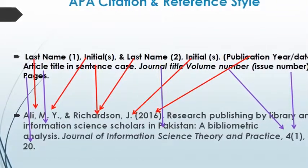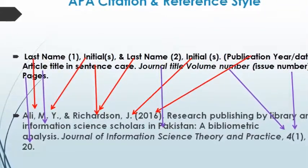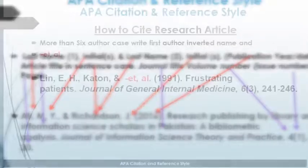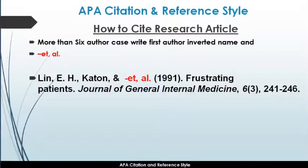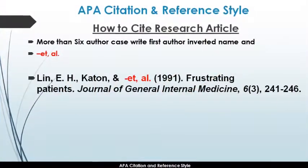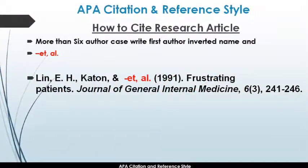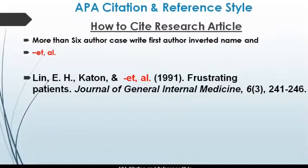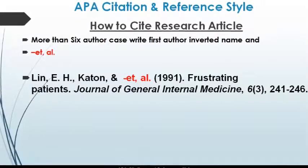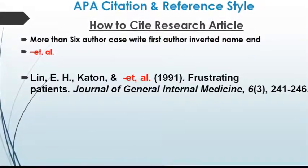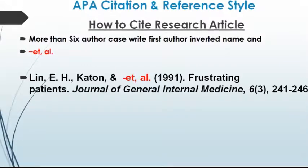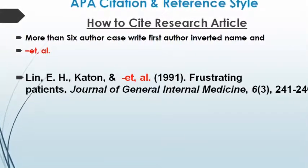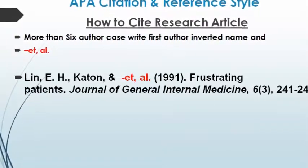The initial page, then a dash, and then the last page. For six or more authors, we write the first author's name inverted, and the rest of the authors are shown with et al.